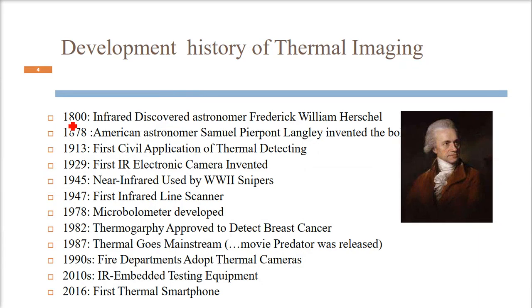How it started: In 1800, infrared was discovered by astronomer Frederick William Herschel. In 1878, American astronomer Samuel Pierpont Langley invented the bolometer. In 1913, the first civil applications of thermal detecting was done. In 1929, the first IR electronic camera was invented. In 1945, near infrared was used by World War II snipers. In 1947, the first infrared line scanner was in place. In 1978, the microbolometer was developed. In 1982, thermography was approved for medical purposes to detect breast cancer.